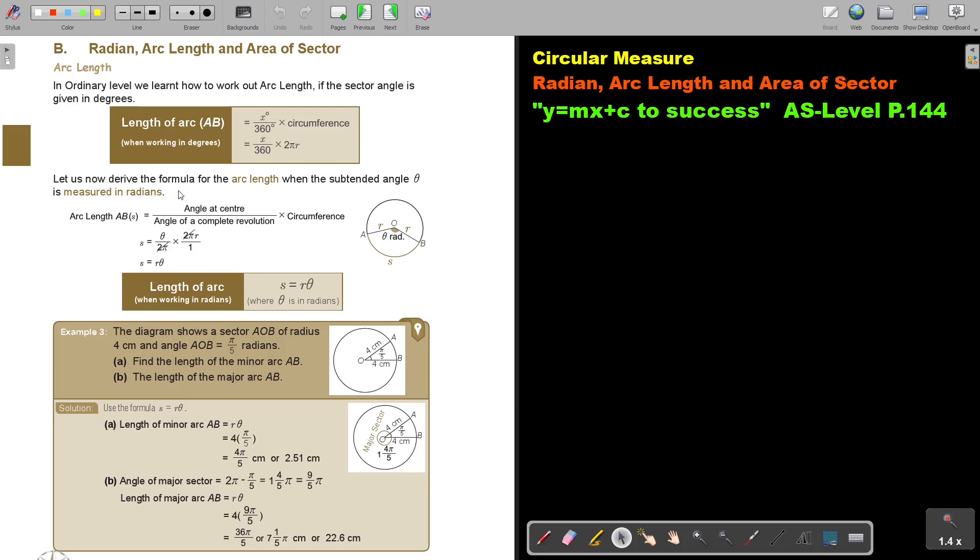Let us now derive the formula for arc length when the subtended angle θ is measured in radians. Arc length equals angle at the center over angle of a complete revolution, multiply circumference. So it's the angle θ over 2π, because that's now instead of 360, multiply 2πr.